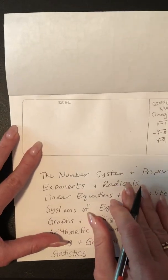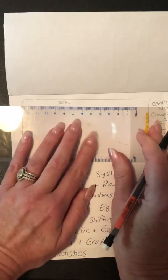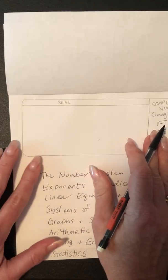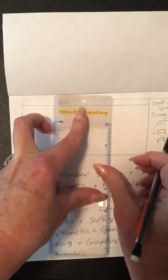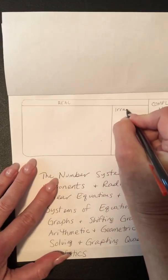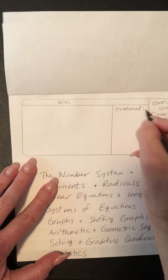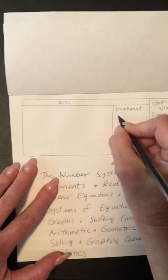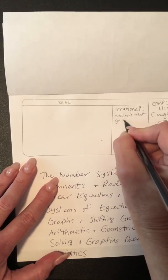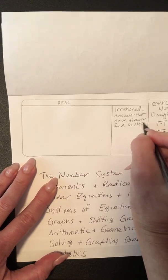Back to real numbers — all real numbers are either rational or irrational. The irrational numbers are decimals that go on forever and do not repeat.